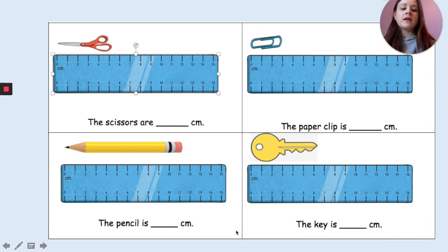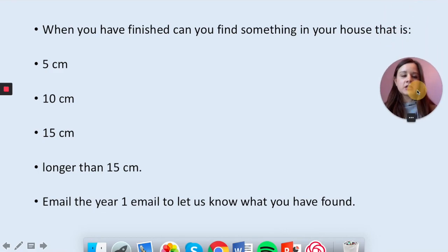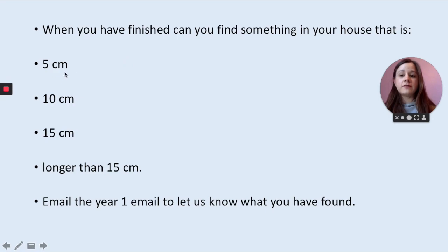Now if you don't like looking at this on the screen, you can go to the year one part of the Grange website and print it off. When you've finished those four questions, you can find something in your house that is five centimeters, 10 centimeters, 15 centimeters, longer than 15 centimeters, and then email the year one email to let me know what you found.